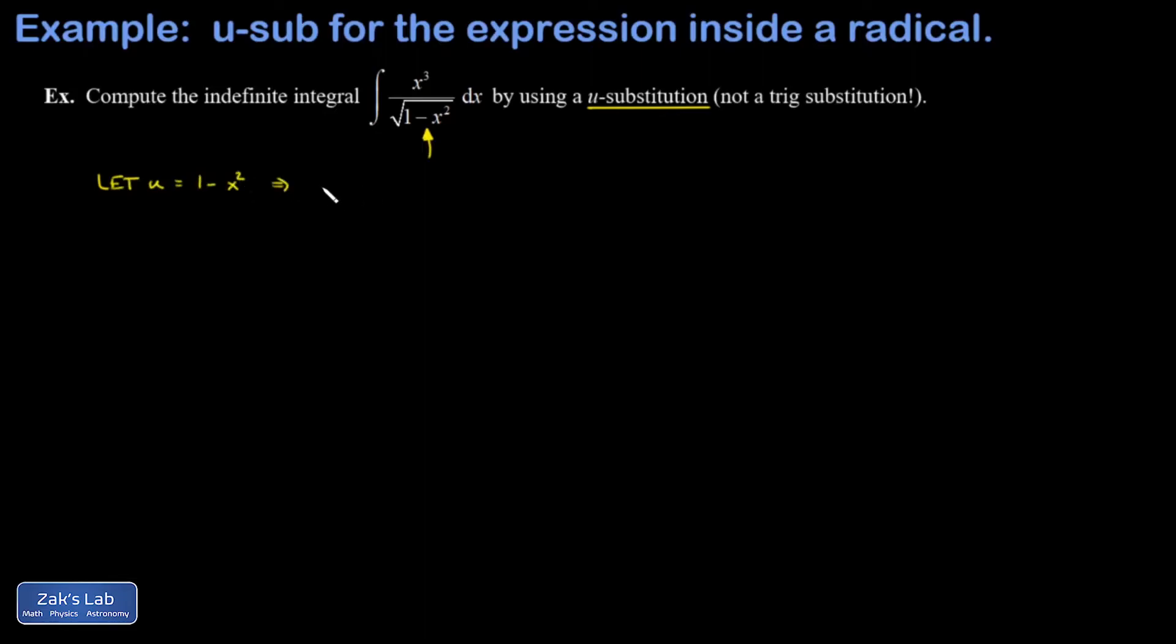Well this means du is going to be negative 2x dx, and I can partially transform the integral by splitting off one of those factors of x from the numerator, and I'm going to throw a negative 2 in there and stick it to that x because I'm trying to find du. And then my denominator is simplified to square root u. Of course I can't just go around multiplying things by negative 2, so I multiply by negative one half out in front to compensate for that.